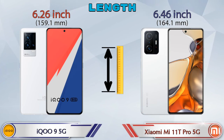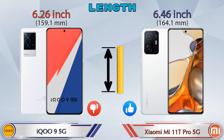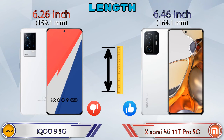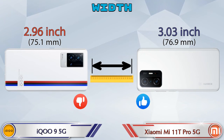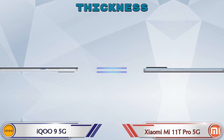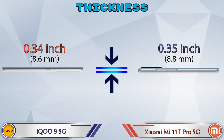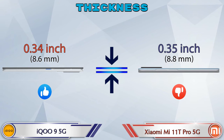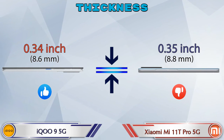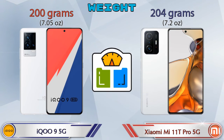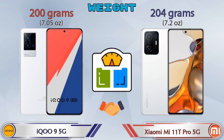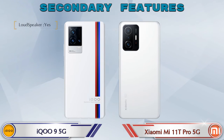Checking the dimensions: the iQOO 9 5G has a length of 6.26 inches while the Mi 11T Pro 5G is 6.46 inches. Width is 2.96 inches for the iQOO 9 5G and 3.03 inches for the Mi 11T Pro 5G. Thickness is 0.34 inches for the iQOO 9 5G and 0.35 inches for the Mi 11T Pro 5G, making it slightly thicker. Weight is 200 grams for the iQOO 9 5G and 204 grams for the Mi 11T Pro 5G, which are almost similar.